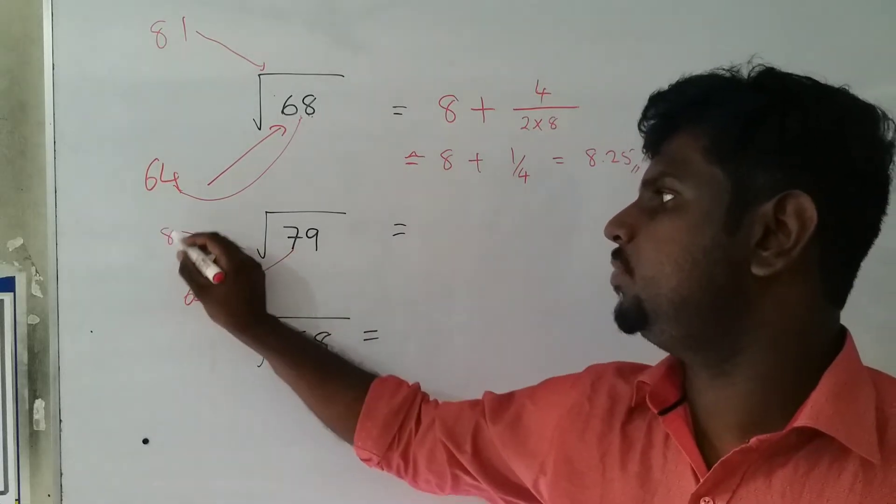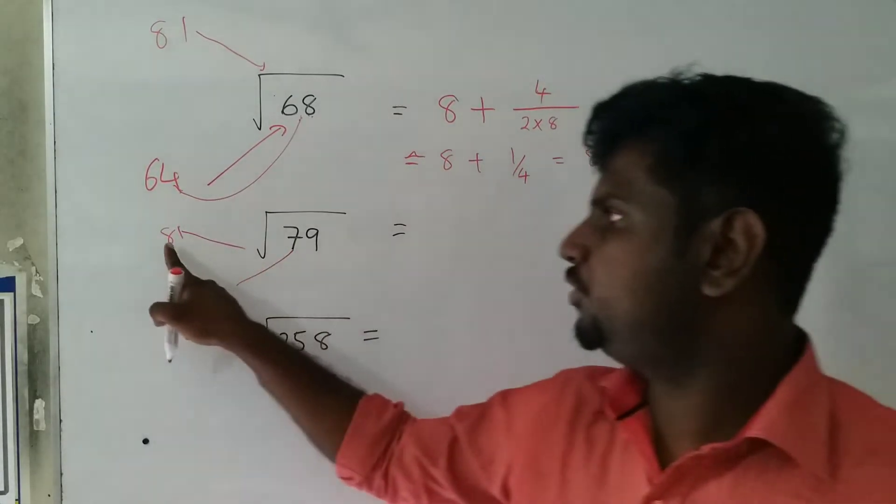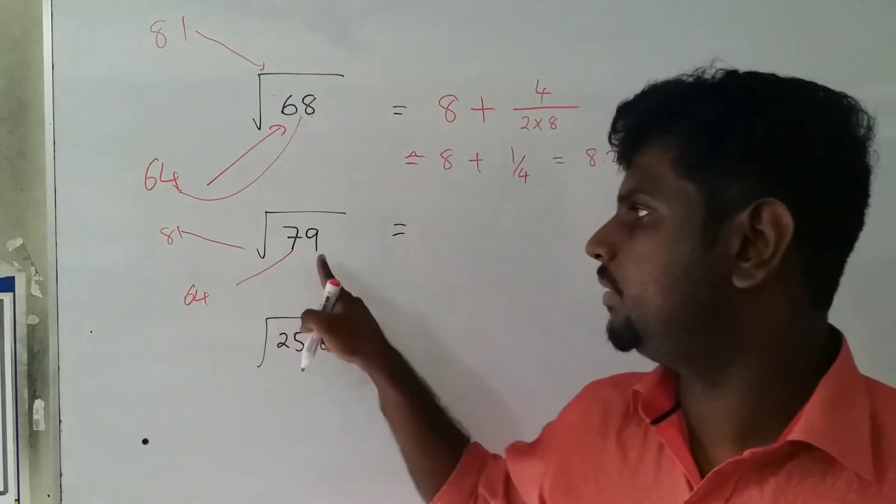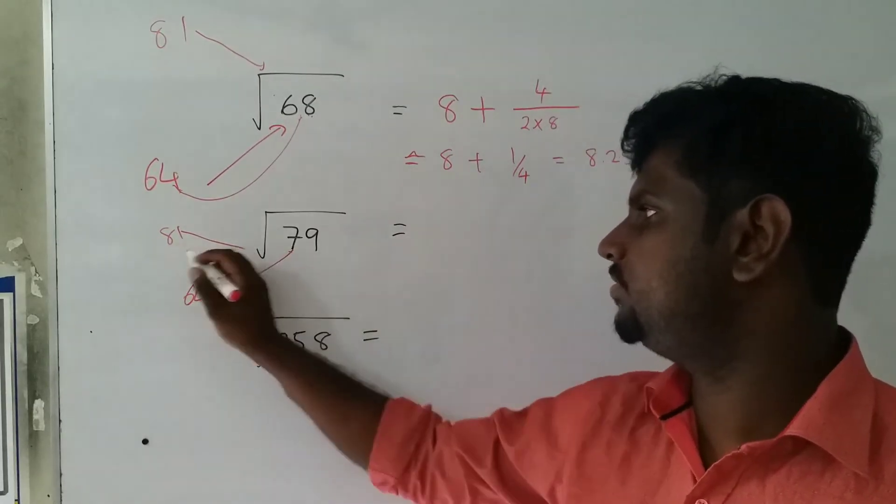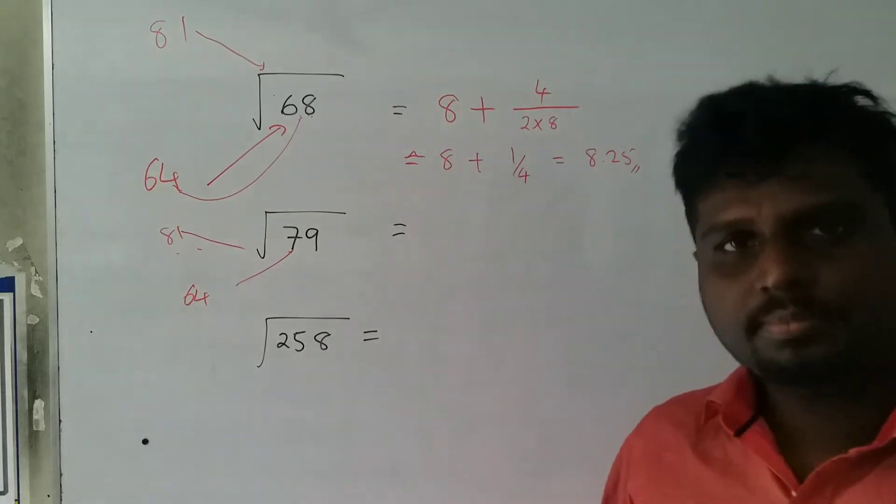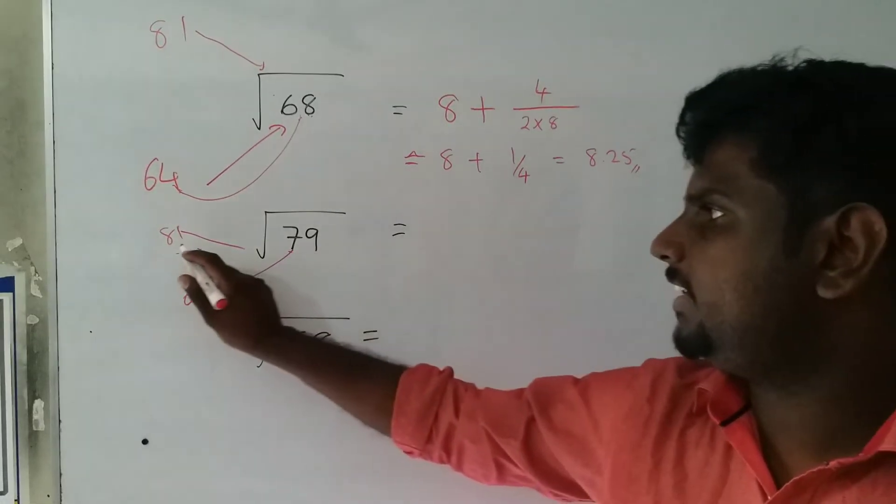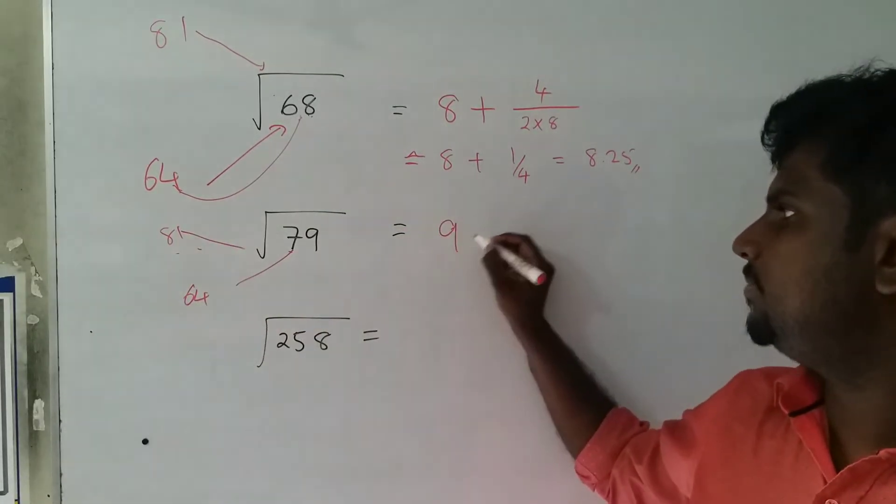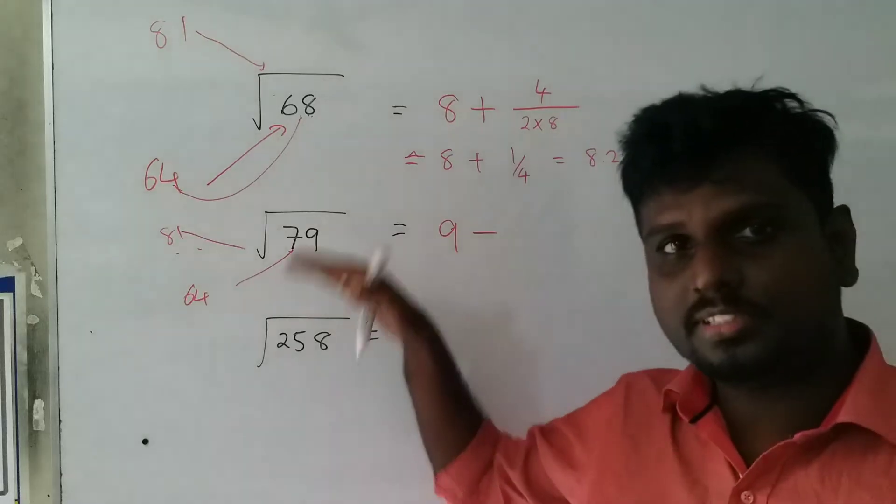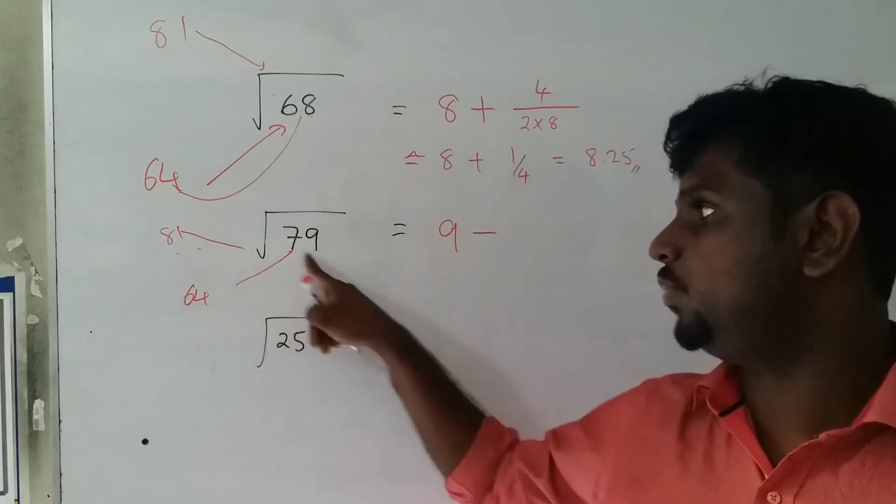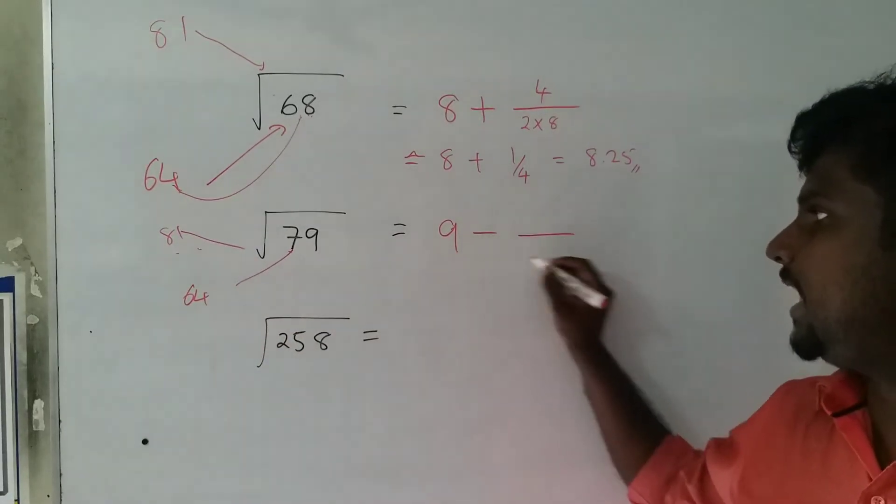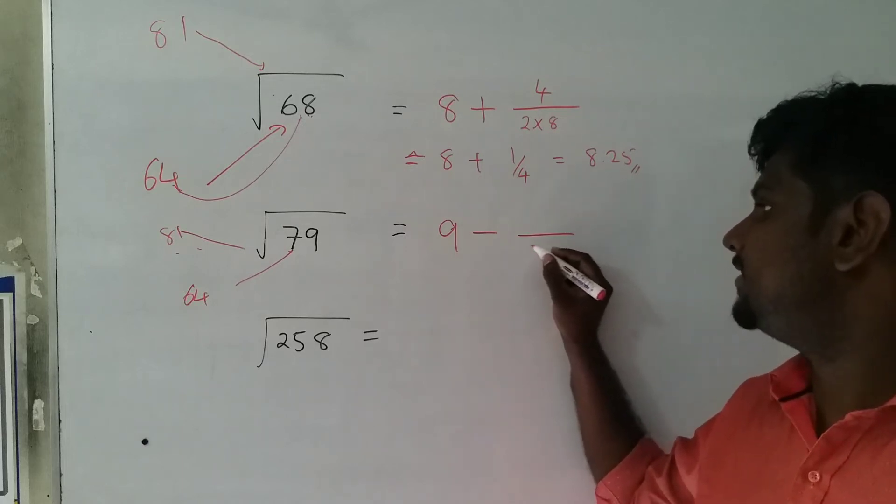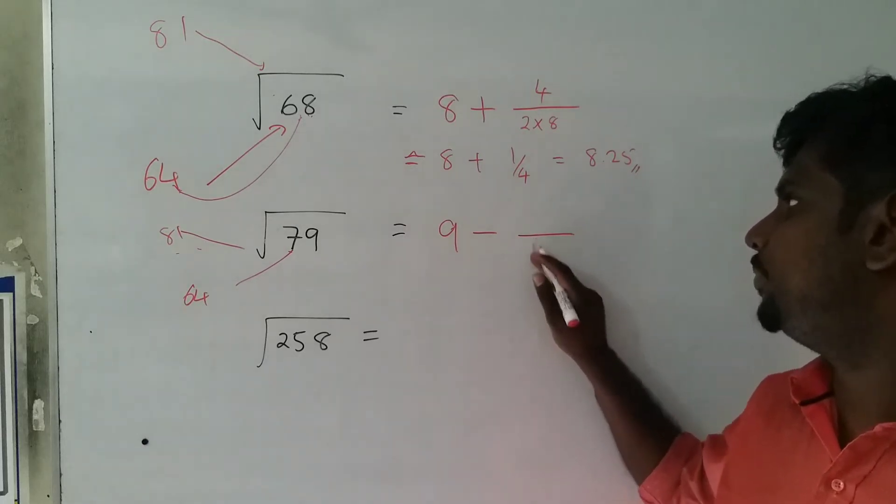So definitely square root of 81 is 9, but this is going to be minus because it's less than 81. So what we are going to do - double this, then 2 into 9 is 18. And here what you are going to put is the difference between 81 and 79.